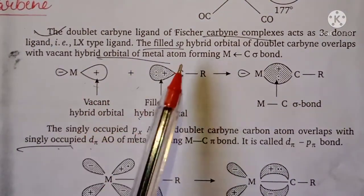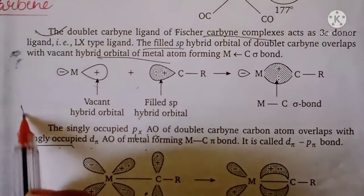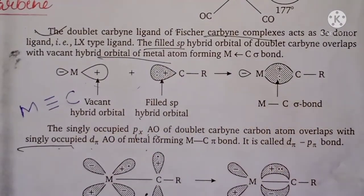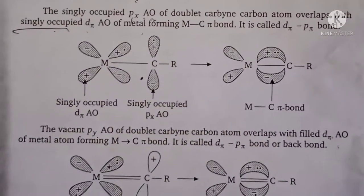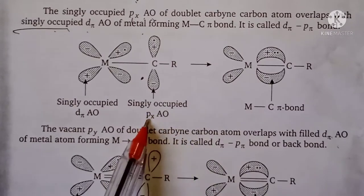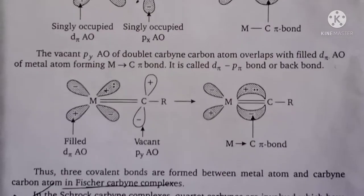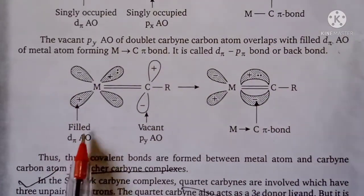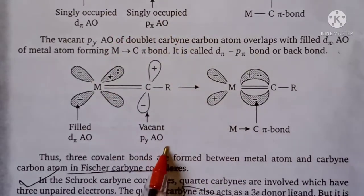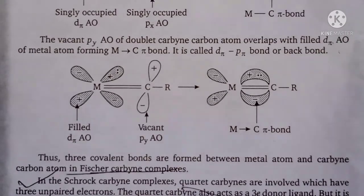Now let's see the bonding. The metal has a vacant hybrid orbital and the carbon has a filled orbital — so you have a sigma bond. There is 1 sigma bond and 2 pi bonds. For the first pi bond: the metal has a singly occupied dπ orbital and the carbon has a singly occupied px orbital. For the second pi bond: the metal dπ orbital (filled) overlaps with the carbon's other px orbital. So the carbyne complex has 1 sigma and 2 pi bonds — a triple bond.